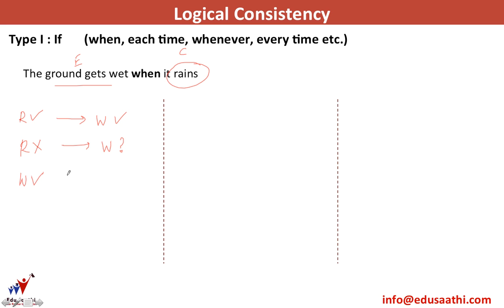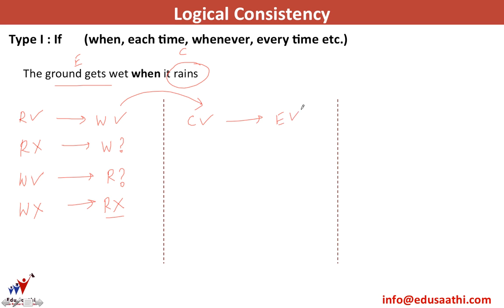Now, if the ground is wet, can we say it had rained? No, because somebody might have taken a bucket of water, which is why the ground was wet. Now, if the ground is not wet, we can certainly say it had not rained, because if it had rained the ground would definitely have gotten wet. So: if there is a cause, the effect is certainly there; if the cause is not there, we cannot say whether the effect happened or not; if the effect occurred, we cannot say which cause produced it; but if the effect has not taken place, the cause definitely did not take place.